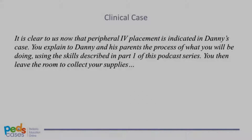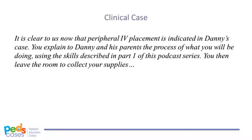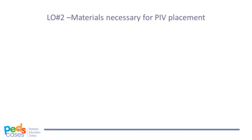It is clear to us now that peripheral IV placement is indicated in Danny's case. You explain to Danny and his parents the process of what you will be doing using the skills described in Part 1 of this podcast series. You then leave the room to collect your supplies. Now that we have covered indications, contraindications, and complications of peripheral IV placement, let's take inventory of what materials we'll need for this procedure and how to set them up.